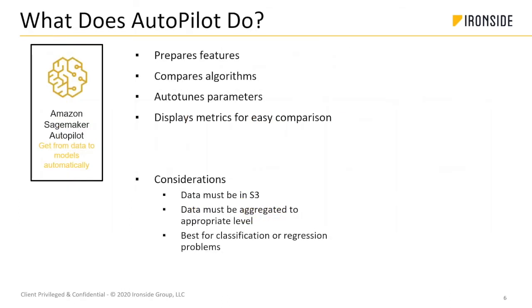AutoML tools generally work similarly. They do some feature preparation — things like one-hot encoding, transformations for skewed or non-normal distributions, or some grouping and clustering as a pre-processing step. What it can't do is mine your entire database and extract features and understand what to aggregate to the appropriate level — that's what you're doing as a data scientist. But there is that mundane kind of cleanup at the end that it will do for you, which is a huge time save.